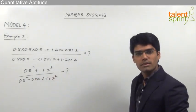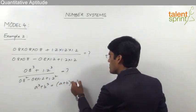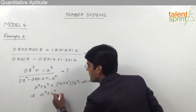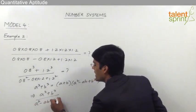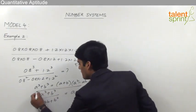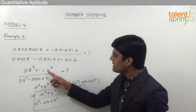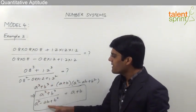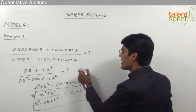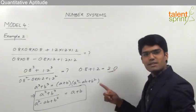We know that a³ + b³ = (a + b)(a² - ab + b²), which means (a³ + b³) ÷ (a² - ab + b²) = a + b. Comparing the given question, a = 0.8 and b = 1.2, so the answer is simply 0.8 + 1.2 = 2.0. The answer for this question is 2.